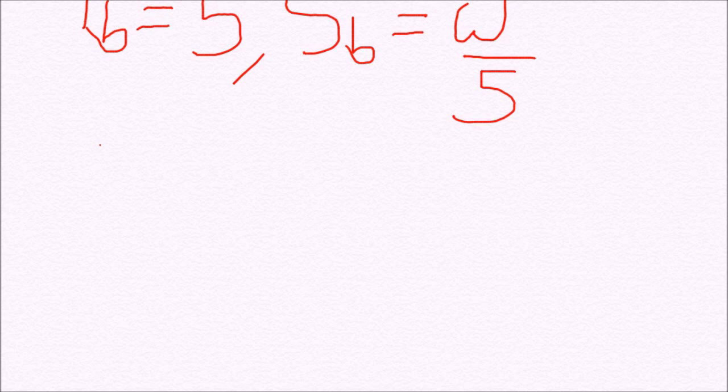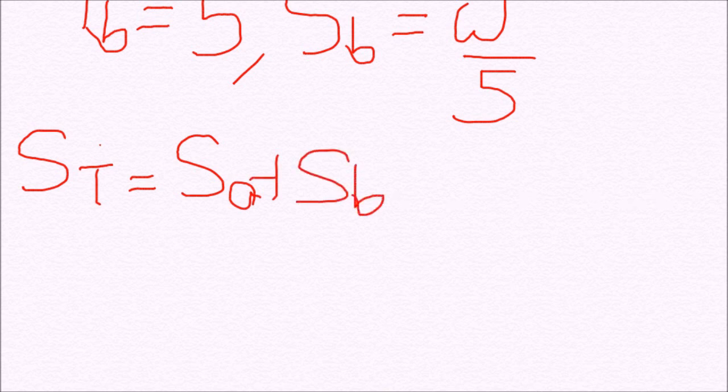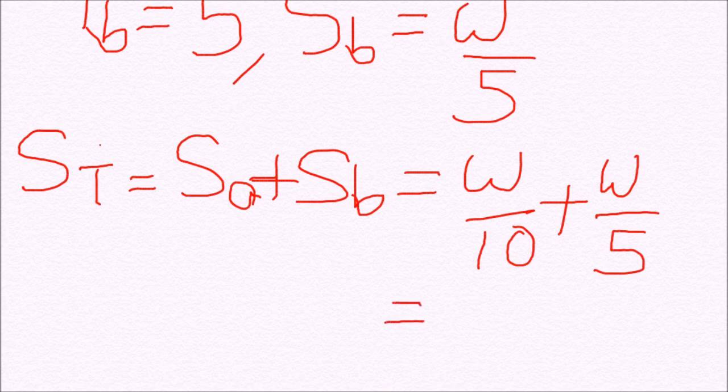Now the total speed in second case becomes S of A plus S of B. That is W by 10 plus W by 5 which is equal to 3 times W by 10.